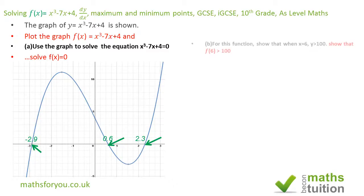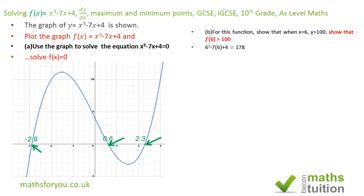Okay moving on section b, it says for this function show that when x is equal to 6, y is greater than 100. This is the GCSE version. Now for IGCSE it might just say show that f(6) is greater than 100. So in both cases what you then do is you substitute 6 in the original equation there and end up with 178 which is true.